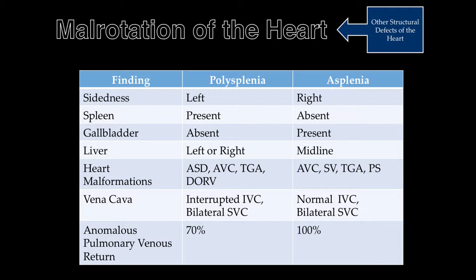Other than straightforward dextrocardia, there are two other syndromes associated with malrotation of the intestinal tract and heart: polysplenia and asplenia. The above table lists the differences between the two syndromes. ASD indicates atrial septal defect; AVC, atrial ventricular canal defect; DORV, double outlet right ventricle; IVC, inferior vena cava; PS, pulmonary stenosis; SV, single ventricle; SVC, superior vena cava; and TGA, transposition of the great arteries.